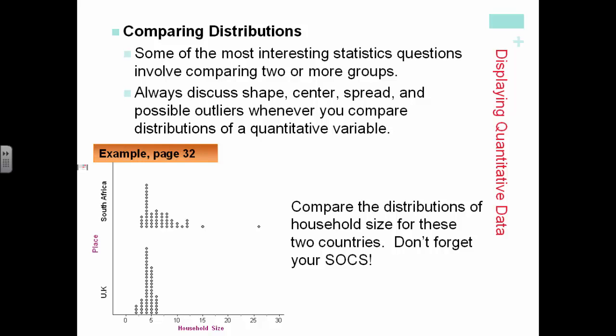And then sometimes we'll be talking about possible outliers. Comparing the distributions of the household size for these two countries, we would have to then use our SOCS in order to describe what they are.